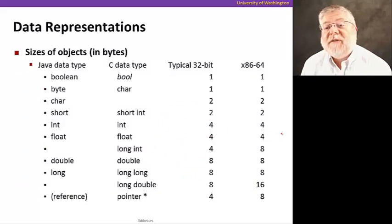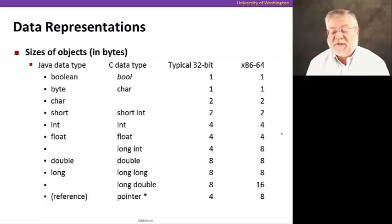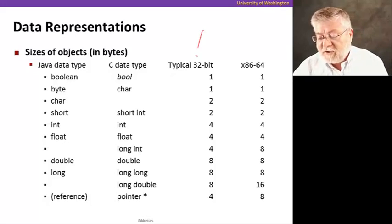In C and in Java, we have many different data types. And how we represent them in our machines varies because of the amount of bits that we need to represent them.